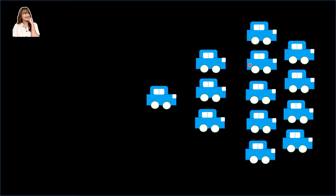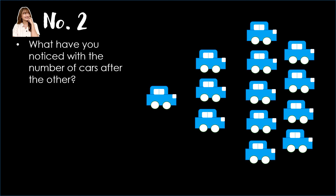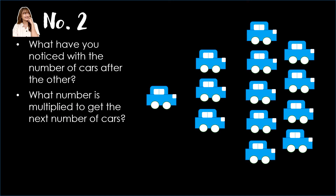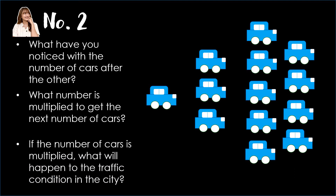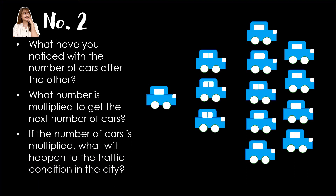Number 2: Observe the given figures on our right. We have 1 car, 3 cars, and 9 cars. Question: What have you noticed with the number of cars one after another? What number is multiplied to get the next number of cars? Lastly, if the number of cars is multiplied, what will happen to the traffic condition in the city?